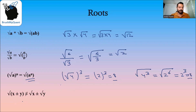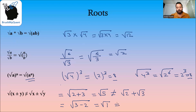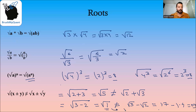√(x ± y) is NOT equal to √x ± √y. For example, √(2 + 3) = √5, and this is not equal to √2 + √3 — we cannot split square roots over addition. Similarly, √(3 − 2) = √1 = 1, which is not equal to √3 − √2. We know √3 ≈ 1.7 and √2 ≈ 1.4, so √3 − √2 ≈ 0.3, which is definitely not equal to 1.